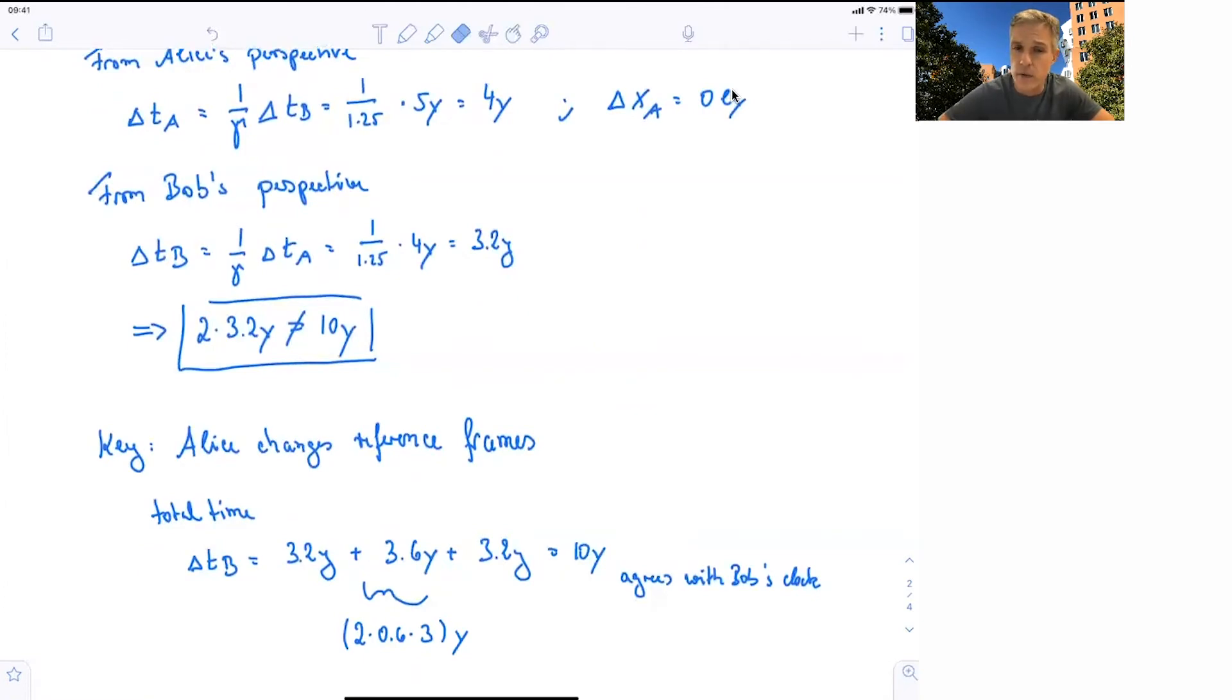So the time as seen by Bob is 3.2 years for the outbound journey, and then 3.6 years in order to resynchronize the clocks on the return, on the turning around, and then 3.2 years on the return, which makes 10 years. And so that observation of Alice is in agreement with Bob's own clock.